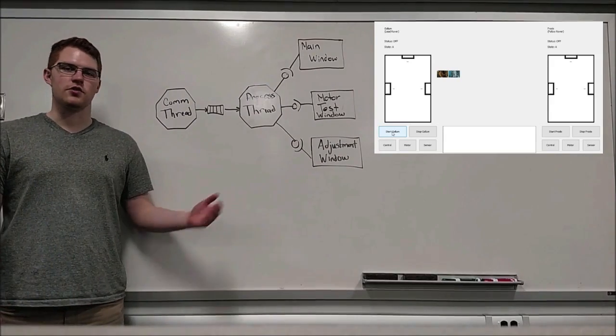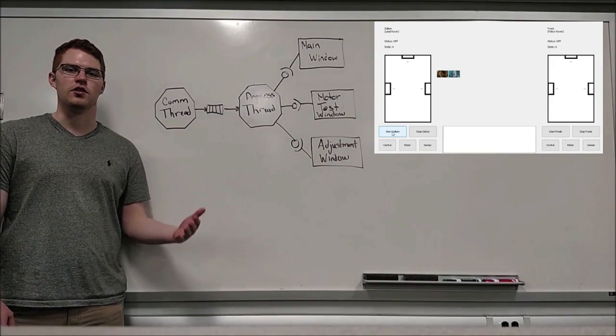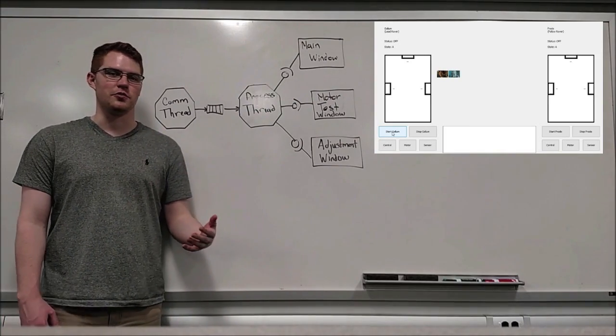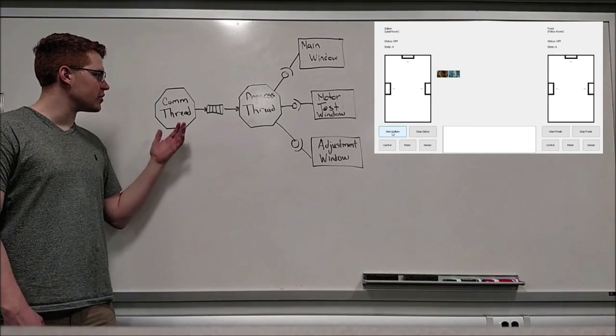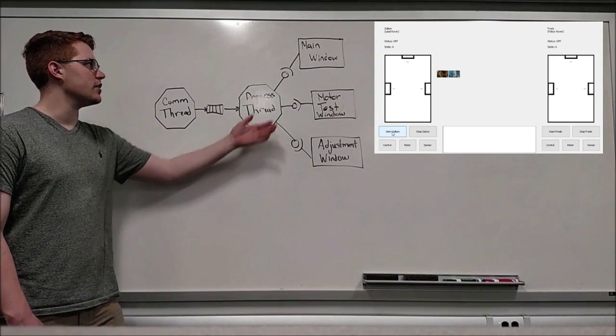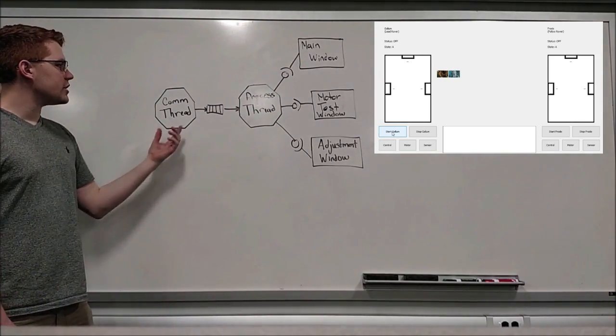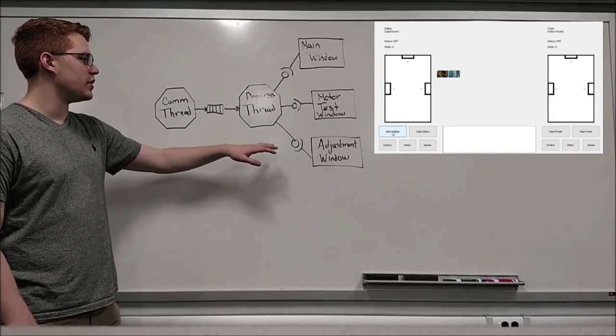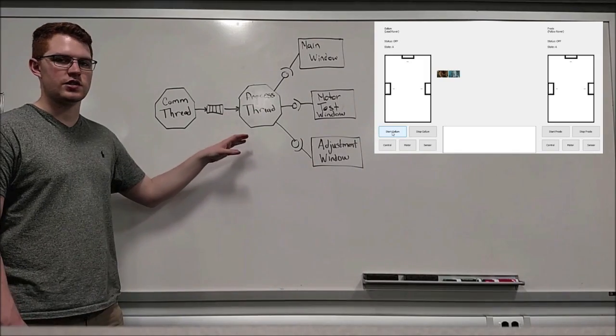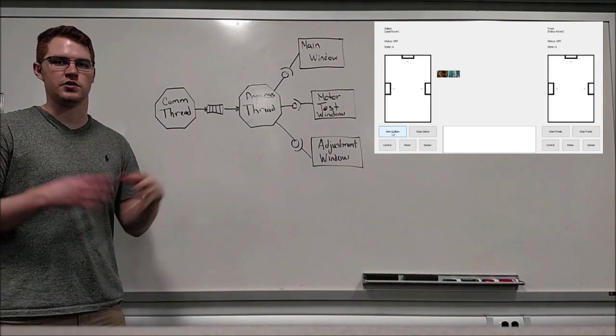So, the GUI runs on a Raspberry Pi. We chose the Python programming language because Python has a wrapper around Qt, which is a popular GUI framework. We have five main components in our GUI: the communication thread, the process thread, the main window, the motor test, and the adjustment window. The communication thread and the process thread communicate via queue. However, the main window, motor test window, and adjustment window communicate with the process thread using signals and slots, which are the mechanism that Qt uses to communicate between threads.